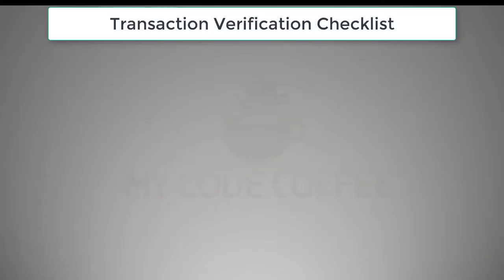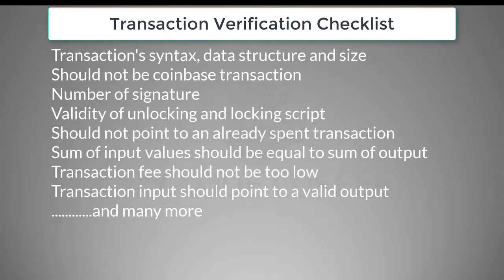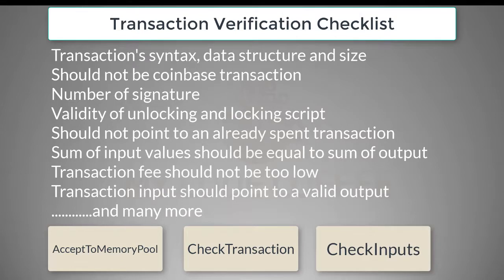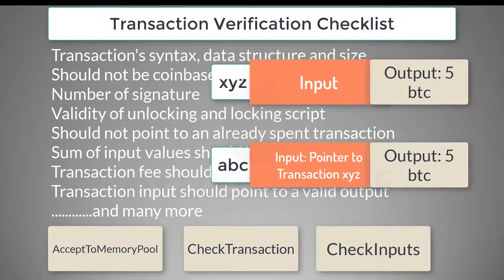So what verifications does a node perform on transactions? This is an ever-evolving list, and you can always see the details in the functions accept to memory pool, check transaction, and check inputs in Bitcoin Core. In this verification process, apart from validating syntax, data structure, size, locking, and unlocking scripts, it also checks that each transaction input in the transaction points to a valid unspent transaction output.